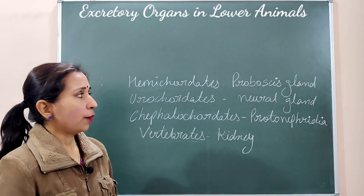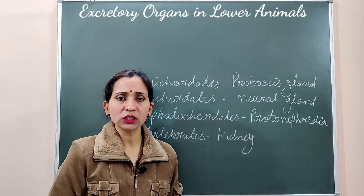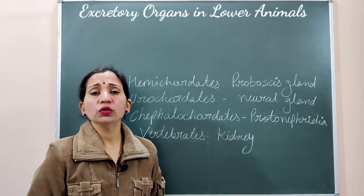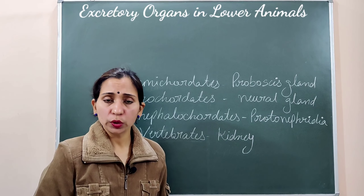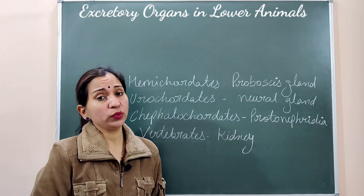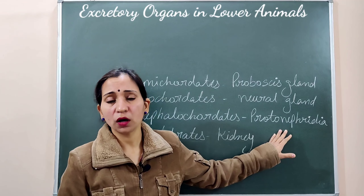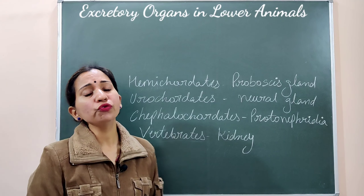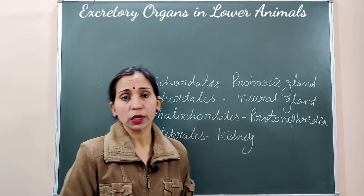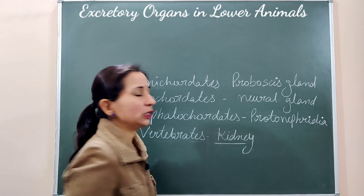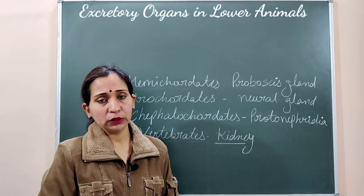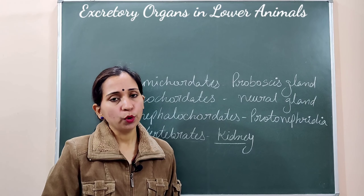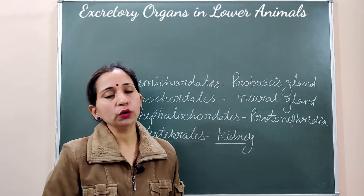The next phylum is Hemichordata, which has a specialized structure for excretion known as the proboscis gland. In Hemichordata we studied about Balanoglossus. Next is Urochordata — we studied about Herdmania — and the excretory organ here is known as neural glands. Next is Cephalochordata, where we studied about Amphioxus. They have excretory organs also known as protonephridia — these protonephridial structures help in excretion. After that we move to vertebrates, which have the specialized excretory organ known as the kidney. That covers all invertebrates and vertebrates and what kind of excretory organs are present in their bodies. In the next video we will start with the next topic, that is the human excretory system.